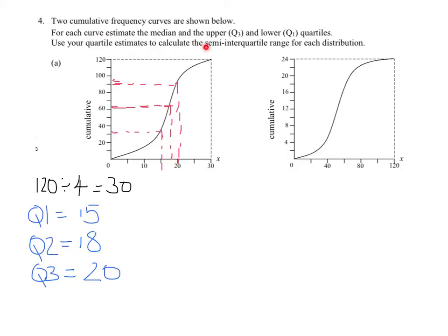Now I'm going to use those estimates to calculate the semi-interquartile range. The semi-interquartile range is calculated by Q3 minus Q1 divided by 2, which in this case is 20 minus 15 divided by 2, which is 2.5.